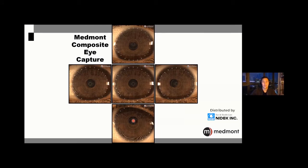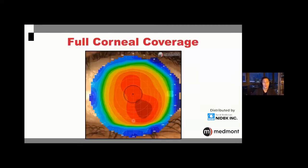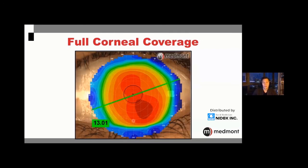With the composite eye capture, each image is converted to a topography and merged together to create a complete understanding of corneal shape, power, and elevation. The largest area I've captured is about 13 millimeters — it's supposed to work on a horse eye up to 14 or 15 millimeters. This is really important because our specialty lenses today — Ortho-K lenses at 10.6 to 11mm, and scleral lenses at 16 to 17mm — require as much corneal data as possible for the best possible starting point for rigid contact lens fits.